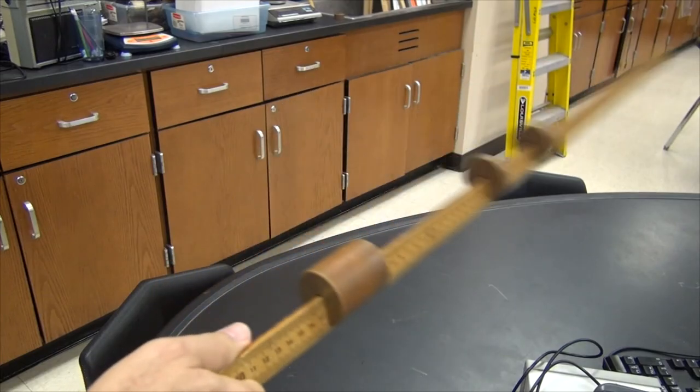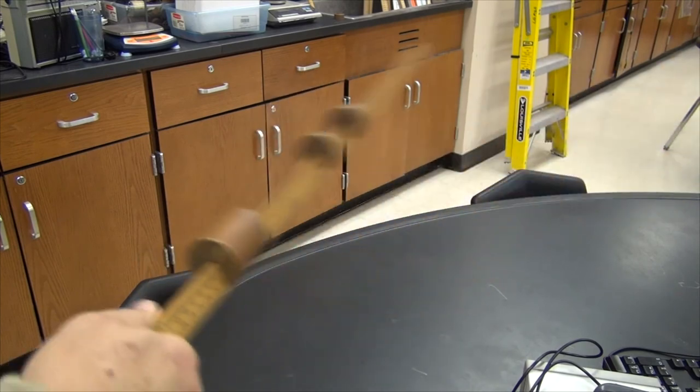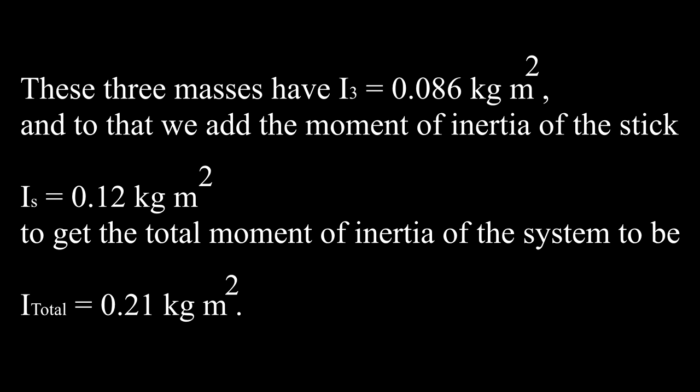Earlier, we calculated that the moment of inertia of these three masses was 0.086 kg m squared, and to that we add the moment of inertia of the stick, I equals 0.12 kg m squared, to get the total moment of inertia of the system to be I equals 0.21 kg m squared.